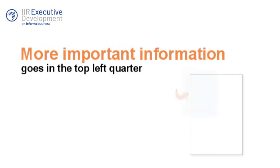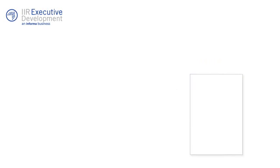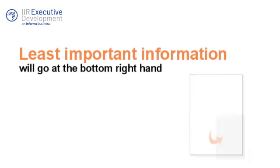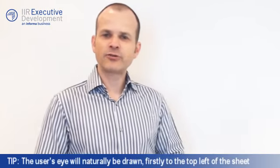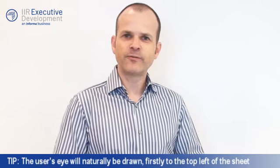This particularly applies where we can perhaps prioritise the information. If certain blocks of information are more important than others, the rule of thumb is that more important information goes on the top left quarter of the sheet, whereas the least important will go on the bottom right hand of the sheet. The reason being, very simply, is that the user's eye will naturally be drawn firstly to the top left of the sheet.